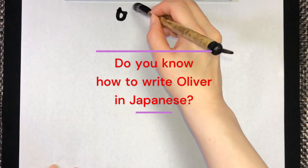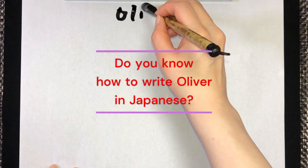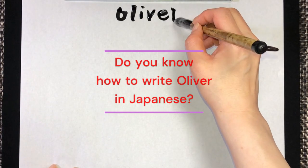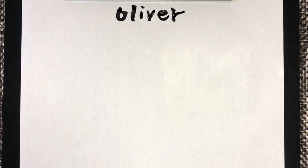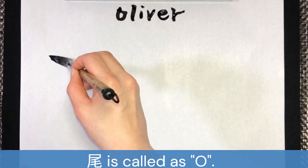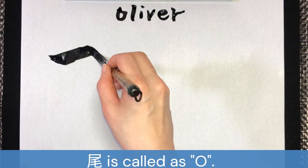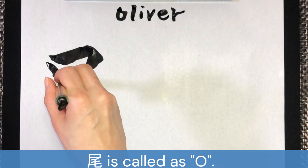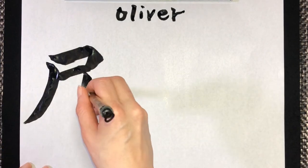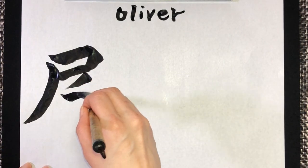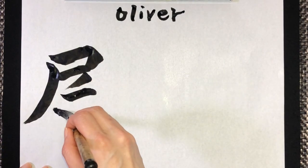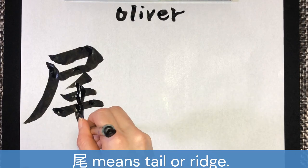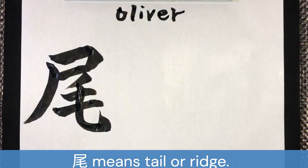Do you know how to write Oliver in Japanese? This kanji is called O. O means tail or ridge.